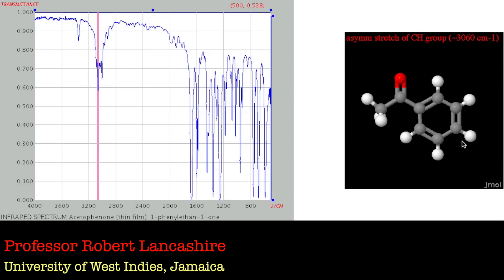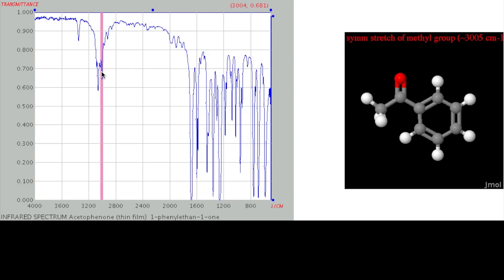So if you look here, it's an asymmetric stretch of a CH group at 3060 wavenumbers. And then if you go down the spectrum, it gives you an interpretation of what those vibrations are.